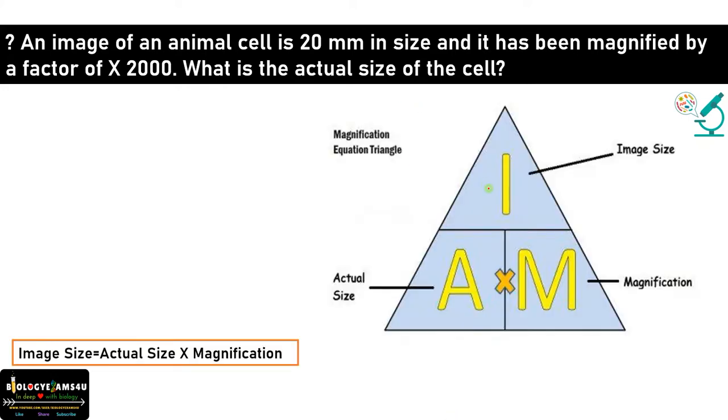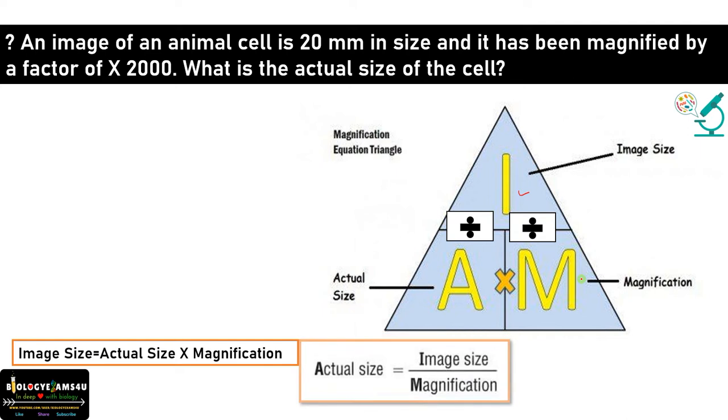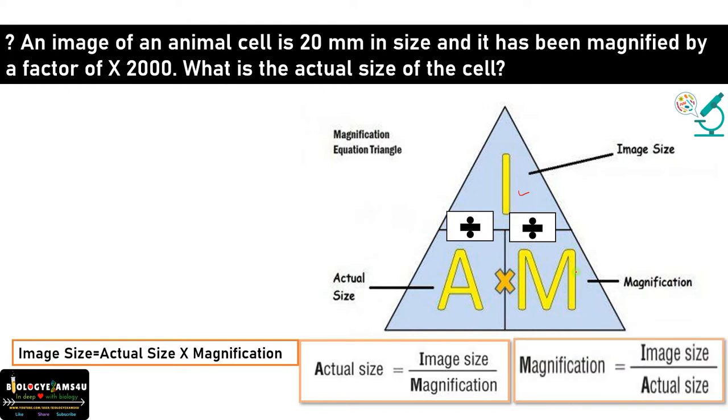This is the magnification equation triangle. To find out the image size, it is a product of actual size into magnification. Similarly we can find out other parameters like actual size by dividing image size by magnification. Whereas to find out magnification, it is by dividing image size by actual size.